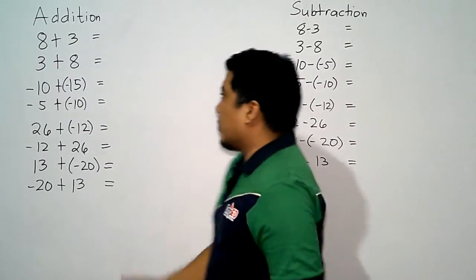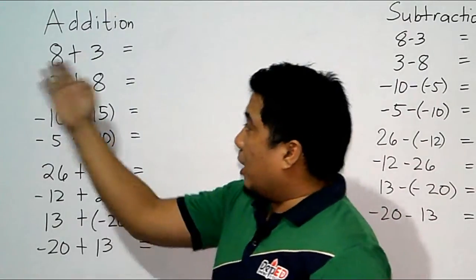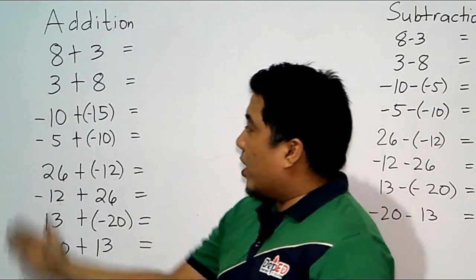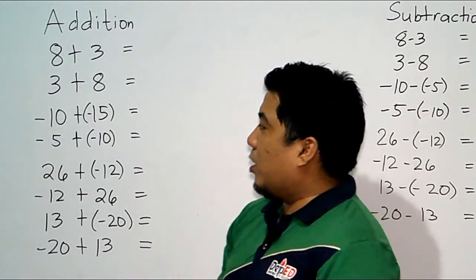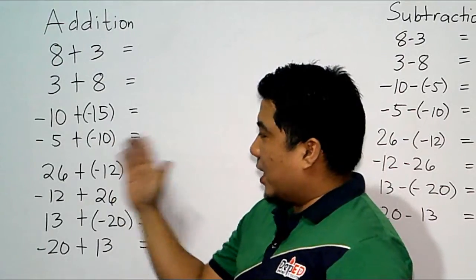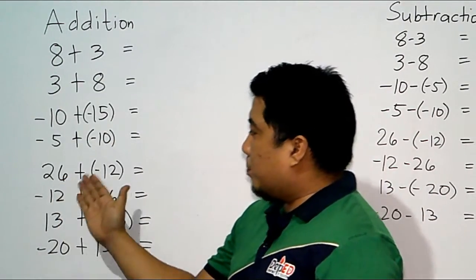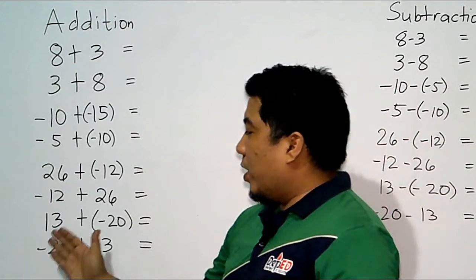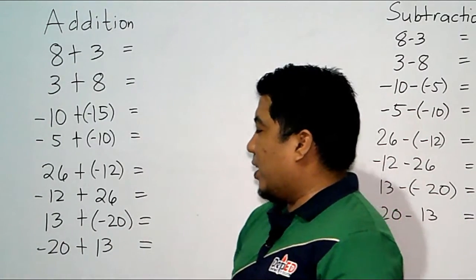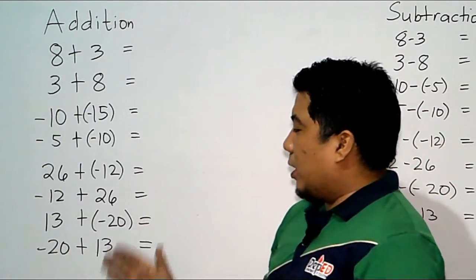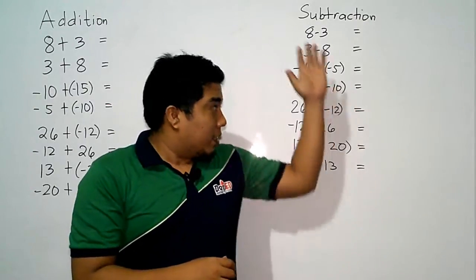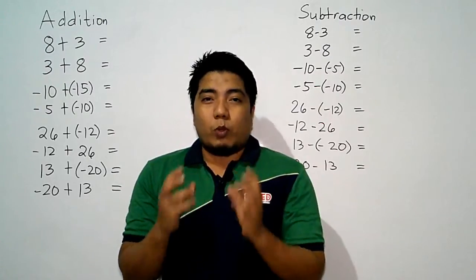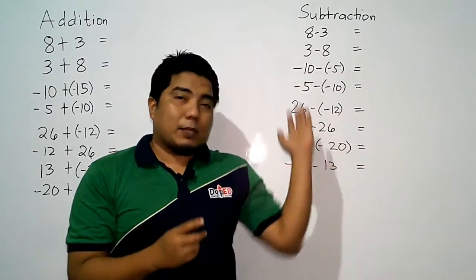Let's put this into action. We have 8 plus 3, 3 plus 8, negative 10 plus negative 15, negative 5 plus negative 10, 26 plus negative 12, negative 12 plus 26, 13 plus negative 20, and negative 20 plus 13. These are the same values we will be focusing on in subtraction as well, however the operation matters.